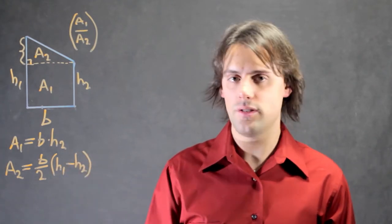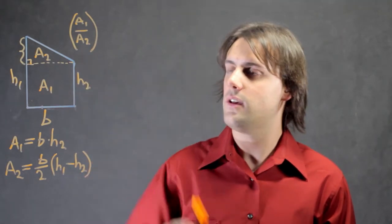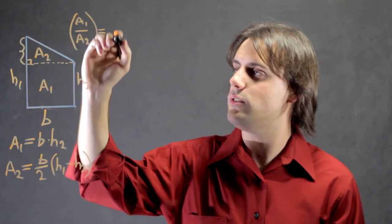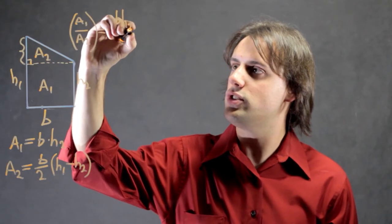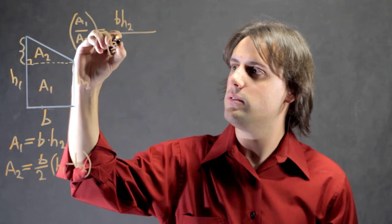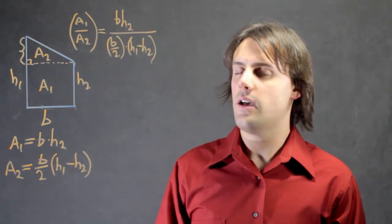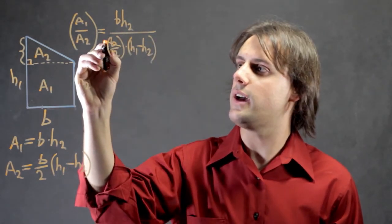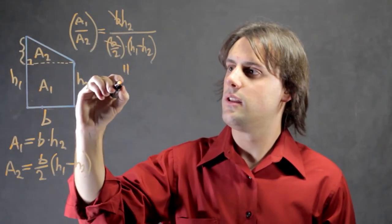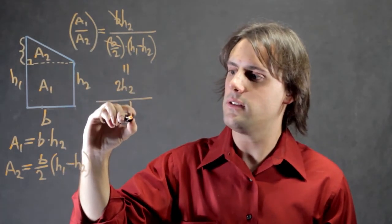Now that I have equations for both areas, I can divide these equations and calculate a ratio for the areas inside of the trapezoid. Thus, I have A1 divided by A2 is equal to B times H2 divided by B divided by 2 times H1 minus H2. I can simplify this by noticing that the base cancels out, and I ultimately get 2H2 divided by H1 minus H2.